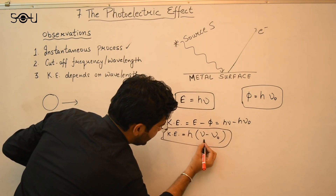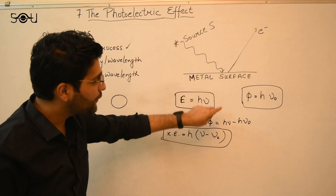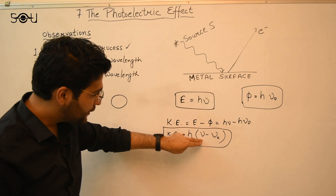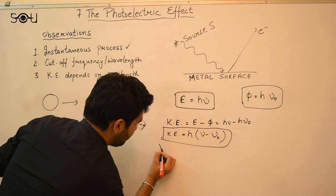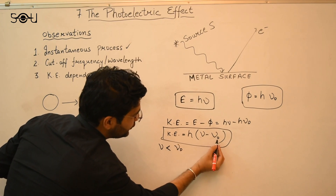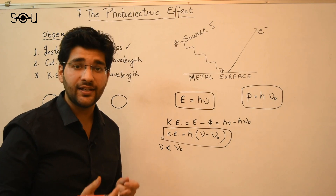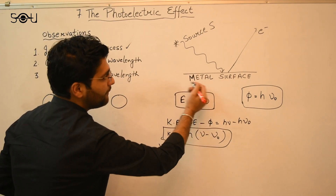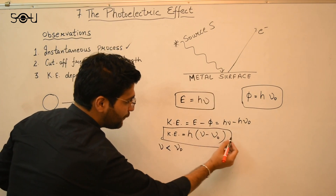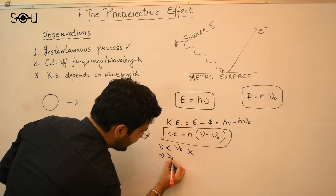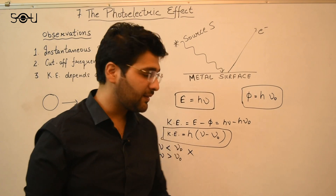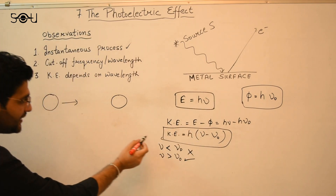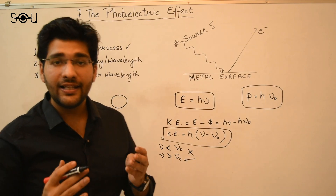Here, ν is the frequency of the source and ν₀ is the cutoff frequency of the metal surface — a property of the metal, not the source. If ν is less than ν₀, the kinetic energy would be negative, which is impossible. Hence, when the source frequency is below the cutoff frequency, the photoelectric effect cannot take place. But if ν is greater than ν₀, kinetic energy is positive and the photoelectric effect occurs. This shows that kinetic energy depends on the frequency or wavelength of the light.